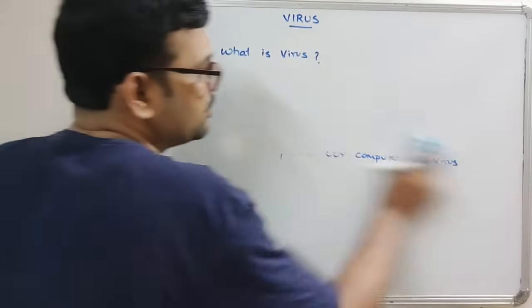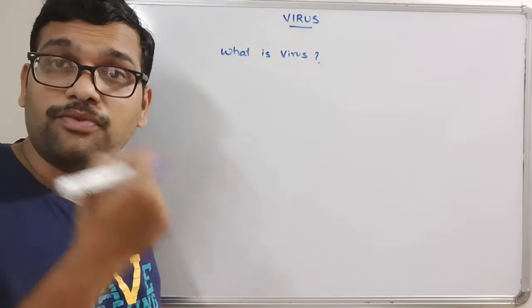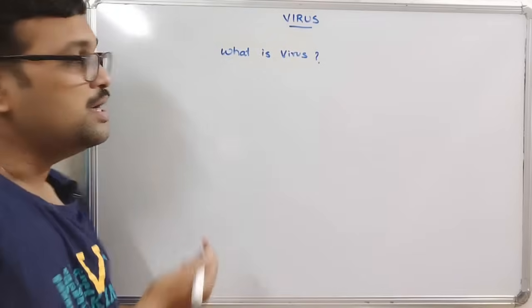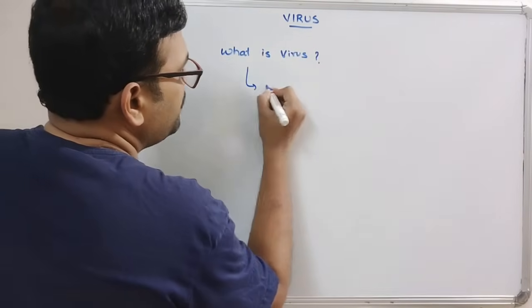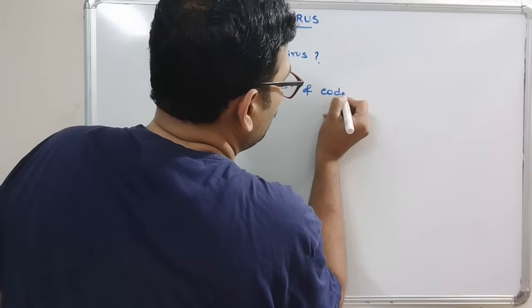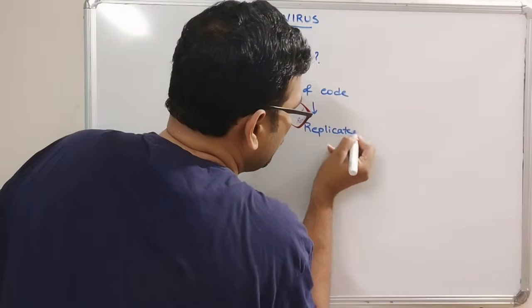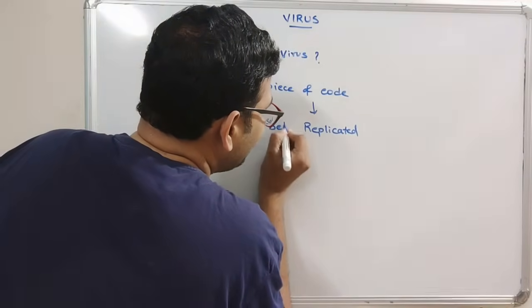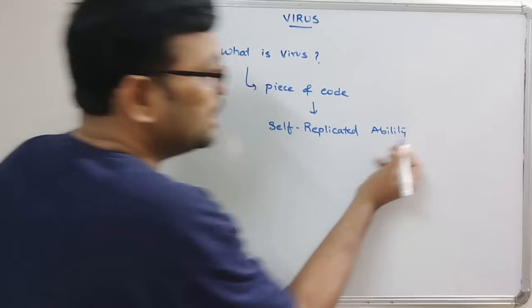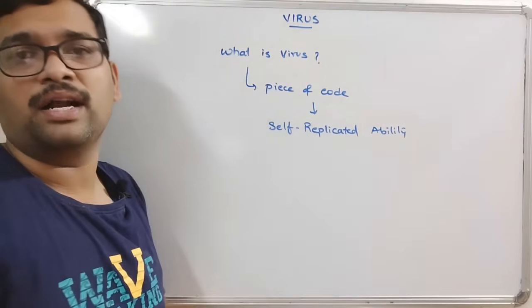So, what is a virus? A virus is also a software — a piece of code which has an ability to self-replicate. It is a piece of code that has self-replication ability, meaning it can produce copies and spread from one file to another.